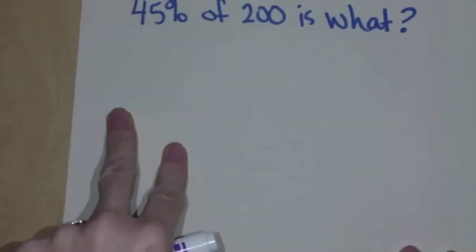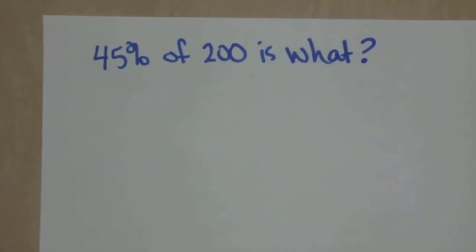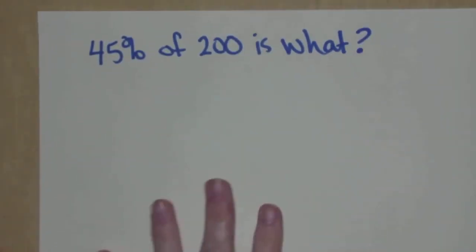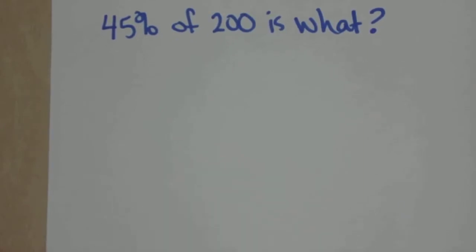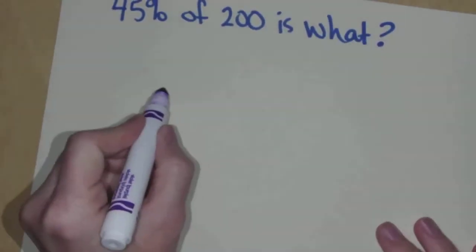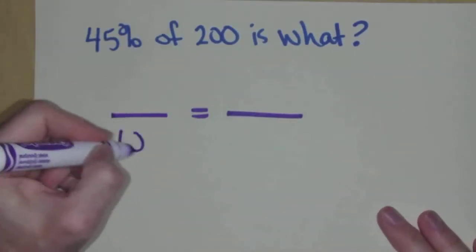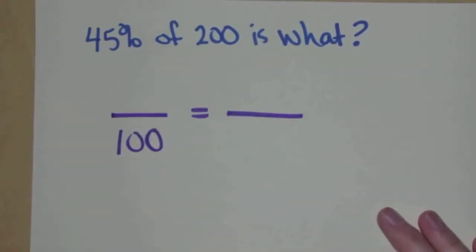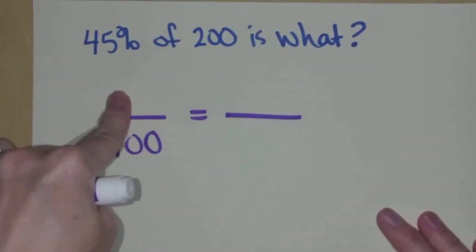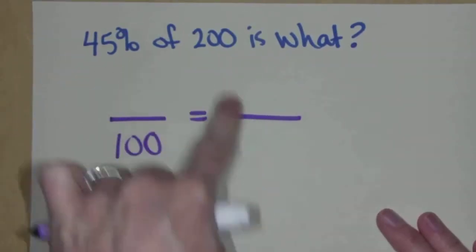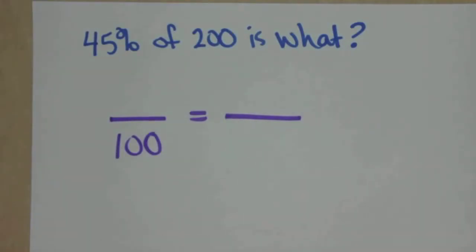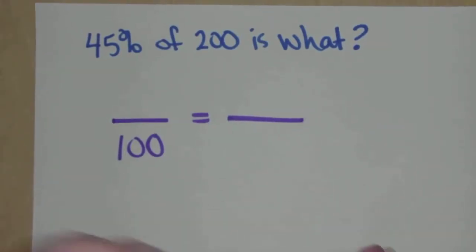Two more problems. Here's another one. Totally different. This time it's not really setting a scenario. It's just basically saying 45% of 200 is what? My little template will never fail you. Set it up. Put your 100 down here. Now you have three slots left. One's for the percent.